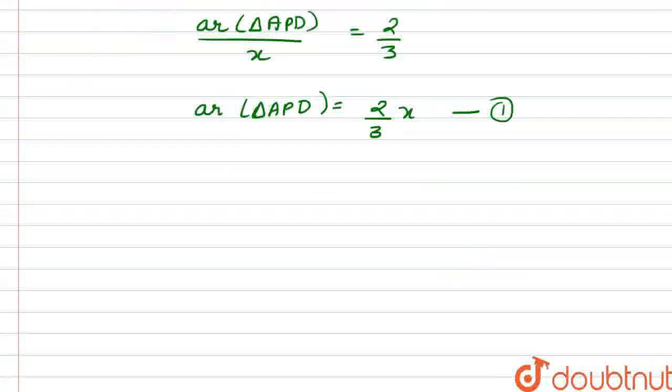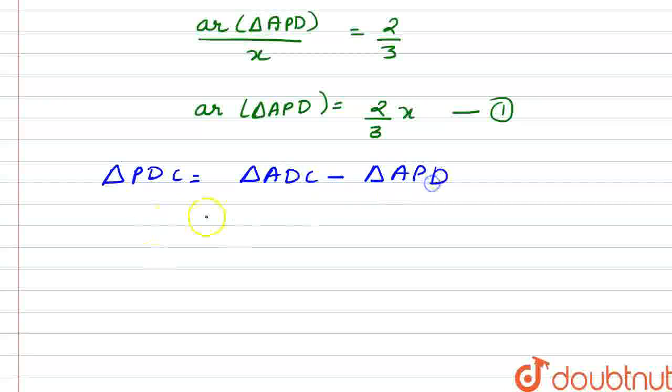And if we look at the diagram, then our triangle PDC - how does it relate to triangle ADC? So here we have defined that area of ADP is 2/3 X. Now, what is our triangle PDC?